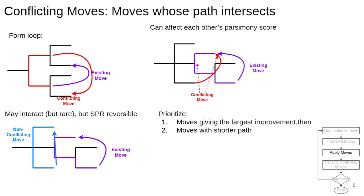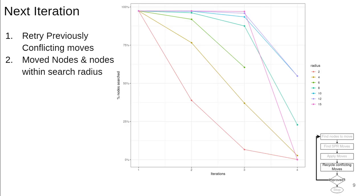Next, matOptimize will apply profitable moves, but moves can be conflicting if their paths intersect — they may either form a loop or affect each other's parsimony score. Among conflicting moves, we prioritize moves that give the largest parsimony improvement, and then break ties by choosing the move with the shortest path. After applying all non-conflicting moves, one round of optimization is complete. Then matOptimize will perform more rounds of optimization, restricting source nodes to those within the user-specified radius of nodes that changed in the last iteration. This repeats until matOptimize cannot find more profitable moves.